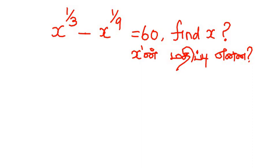Find the value of x. The equation is x to the power 1/3 minus x to the power 1/9 equals 60.